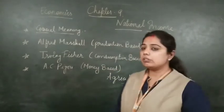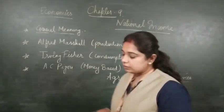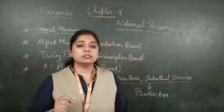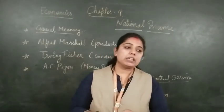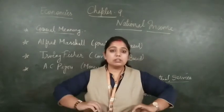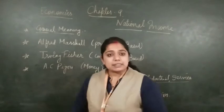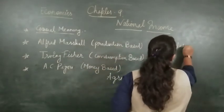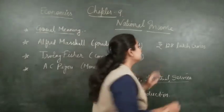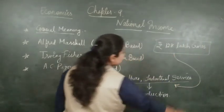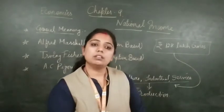During a whole year, the products which we are manufacturing — the value of those products and services — is known as national income. For example, the national income of our country is 128 lakh crores. This is the income of the whole country, not for one company or one family. This income comes from these three sectors only, and that income is known as the national income.